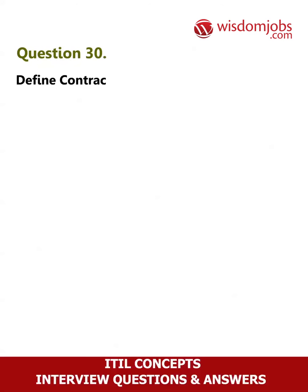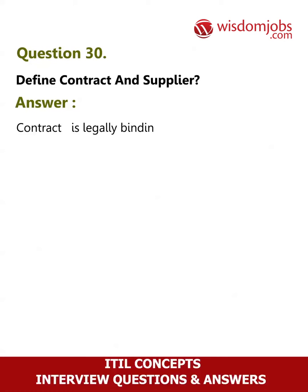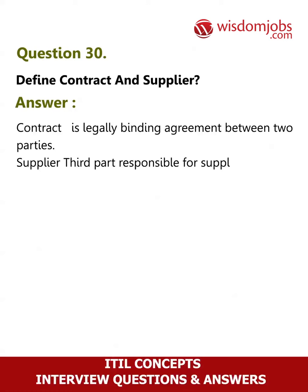Question 30: Define contract and supplier. Answer: Contract — a legally binding agreement between two parties. Supplier — a third party responsible for supplying goods or services.